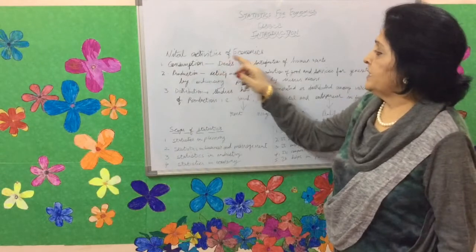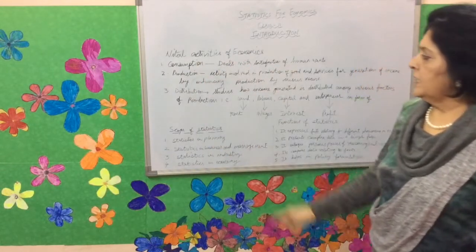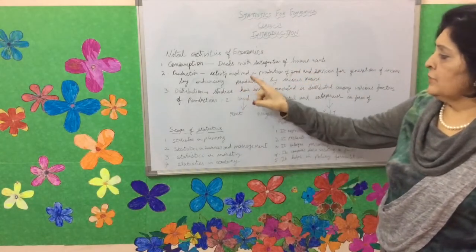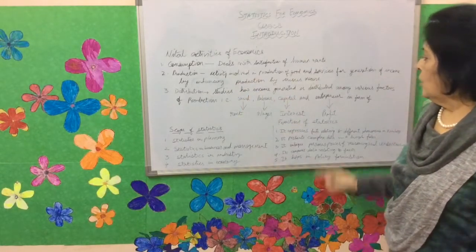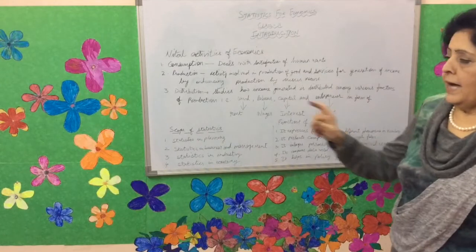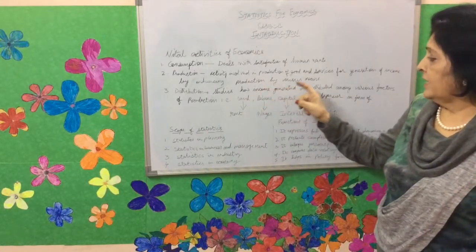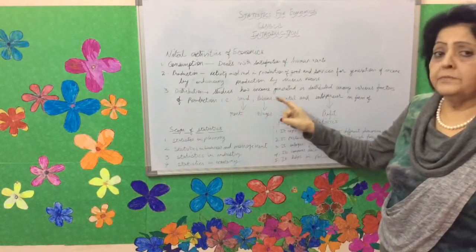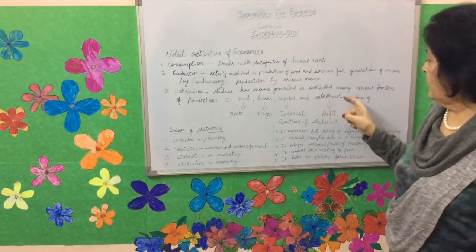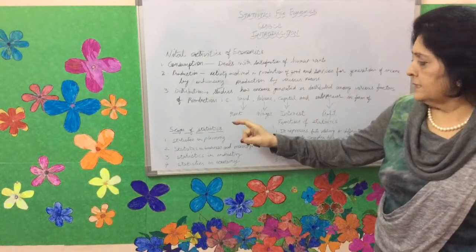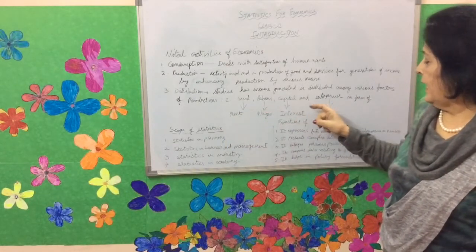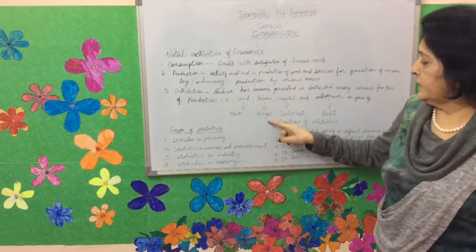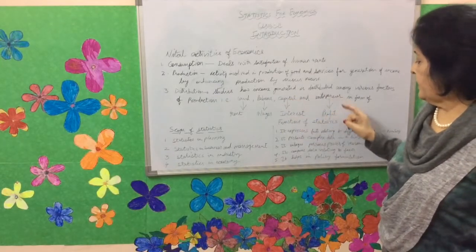Vital activities of economics: Consumption deals with the satisfaction of human wants. Production refers to activities involved in producing goods and services for generation of income by enhancing production by various means. Distribution studies how income generated is distributed among the various factors of production — land, labor, capital, and entrepreneur — in the forms of rent, wages, interest, and profit respectively.